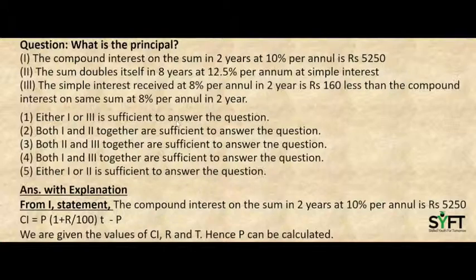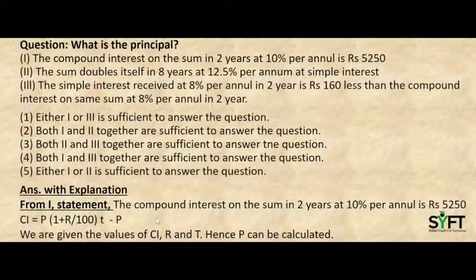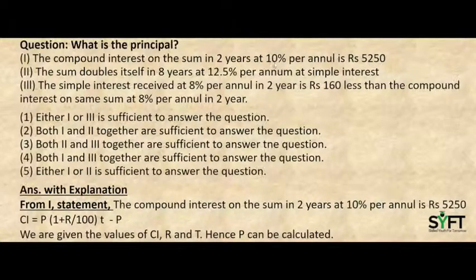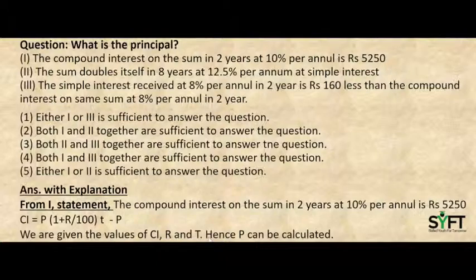The options in data sufficiency questions are generally very confusing, so we need to go through them carefully. From Statement 1, the compound interest on the sum in two years at 10% per annum is Rs. 5,250. The compound interest amount is Rs. 5,250, rate of interest is 10%, and time is two years. The formula for compound interest is P × (1 + R/100)^T − P. All values are given, so we can easily calculate the principal from this statement.